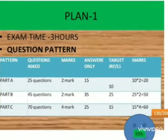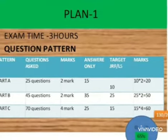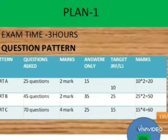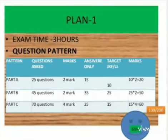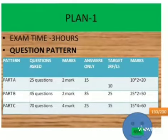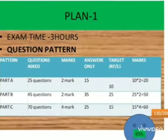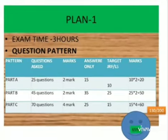Part B: 45 questions, two marks. You have to write 35 questions. Part C: 70 questions, four marks, but you have to write only 25 questions. But our target is, if JRF or LS, you have to write Part A: 10 questions.